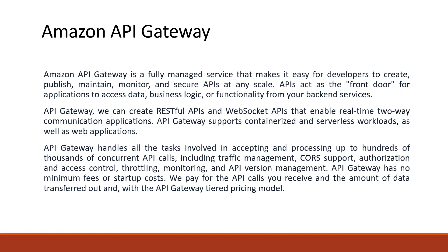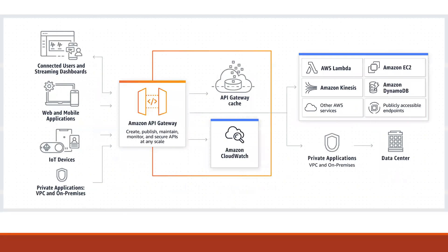So you can see a basic working diagram here. Here are the users, connected users, and a streaming dashboard. We have a web application as endpoint users and we have an API Gateway where you can create, publish, maintain, monitor, and secure your APIs. We also have CloudWatch to monitor logs, and we can maintain a cache. Then we can have private applications, data centers, Amazon Kinesis, Lambda, EC2, DynamoDB - these are all the endpoints we can utilize.